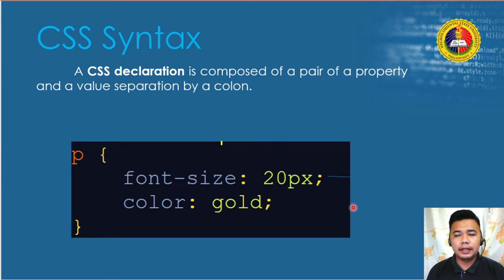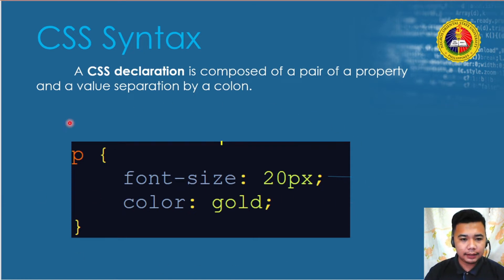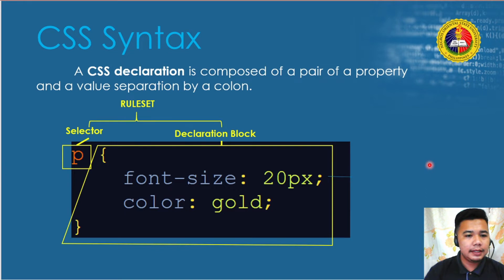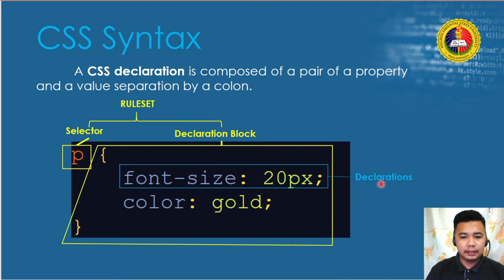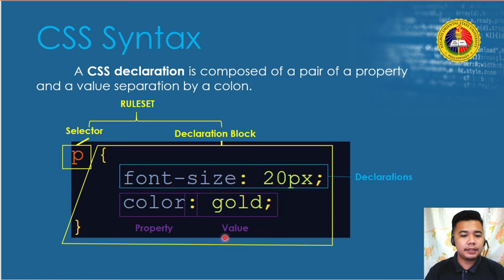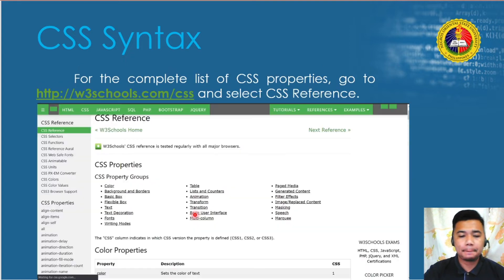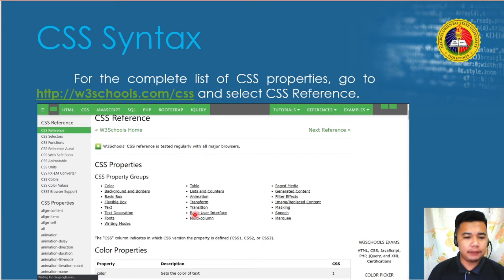Let's review what we've learned so far about CSS syntax. The ruleset is composed of a selector and a declaration block. The declaration block contains lines of declarations. Each declaration contains a property and value separated by a colon, and declarations are separated by semicolons. For the complete list of CSS properties, go to www.w3schools.com/CSS and select CSS Reference to see the full list of properties and their valid values.